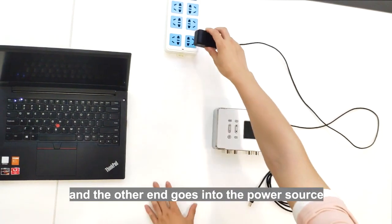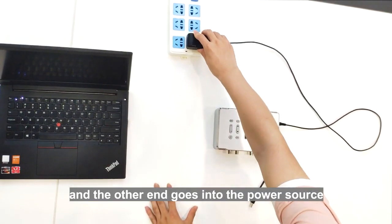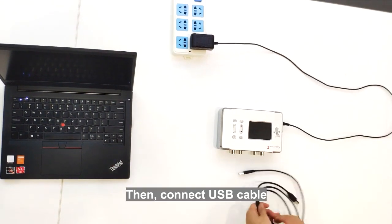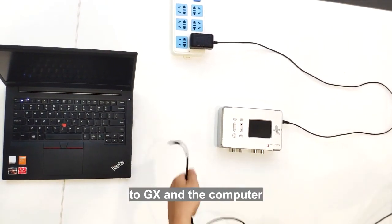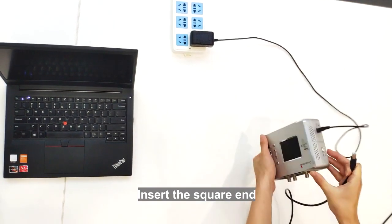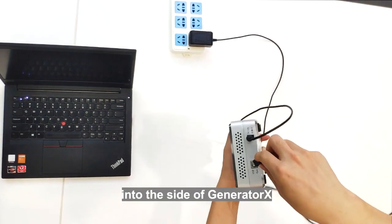Connect the USB cable to GX and the computer. Insert the square end into the side of Generator X and the USB end into the computer.